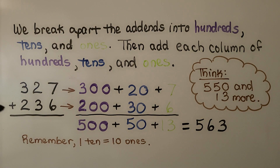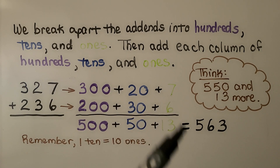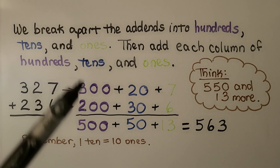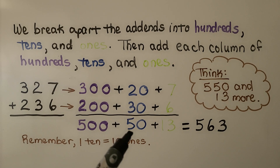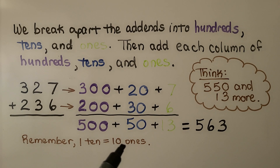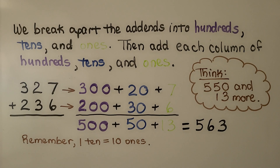We have 327 plus 236. 327 is 300 plus 20 plus 7. 236 is 200 plus 30 plus 6. We add the hundreds — we have 500. We add the tens — we have 50. We add the ones — we have 13 ones. Remember, one 10 is equal to 10 ones, so we can think 550 and 13 more. That would be 563.